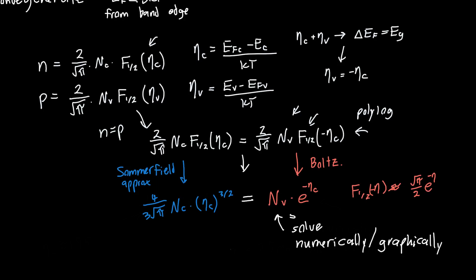If you actually plug in some values, if you plug in the hole mass is equal to 0.5, and the electron mass is equal to 0.067, as a fraction of the free electron mass, if you plug this in, you'll get a value for eta c of about 2.15.